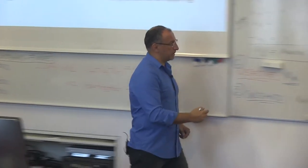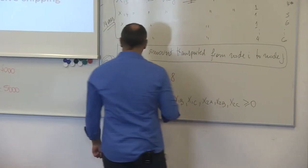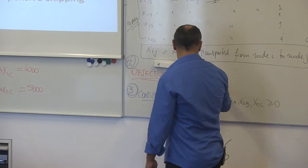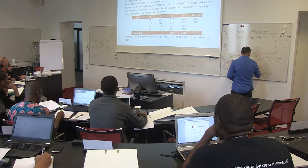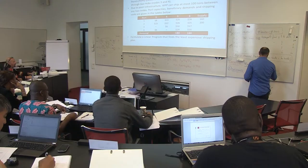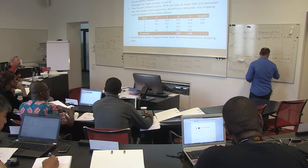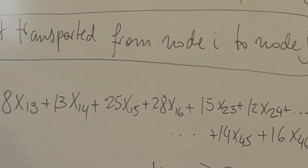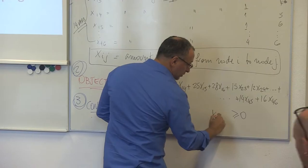So it's 8X_13, 13X_14, 25X_15, 28X_16. So now we need to account for some of the variables.